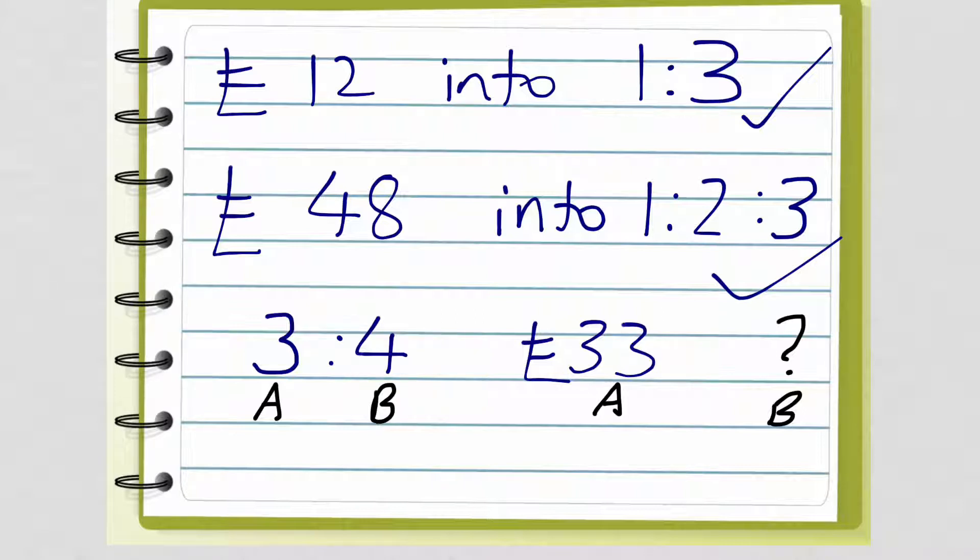And then if you get really good, you'll be able to work out a problem like this, where two people, A and B, have split some money into the ratio 3 to 4. If person A has £33, how much will person B have?